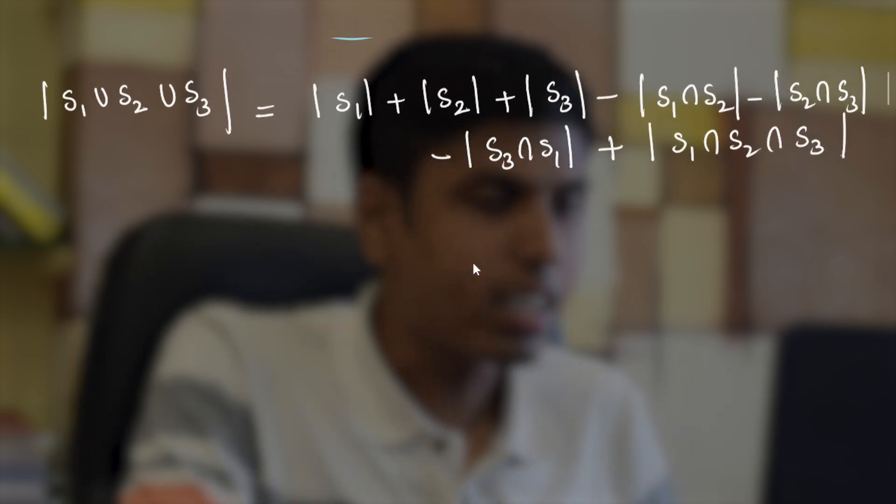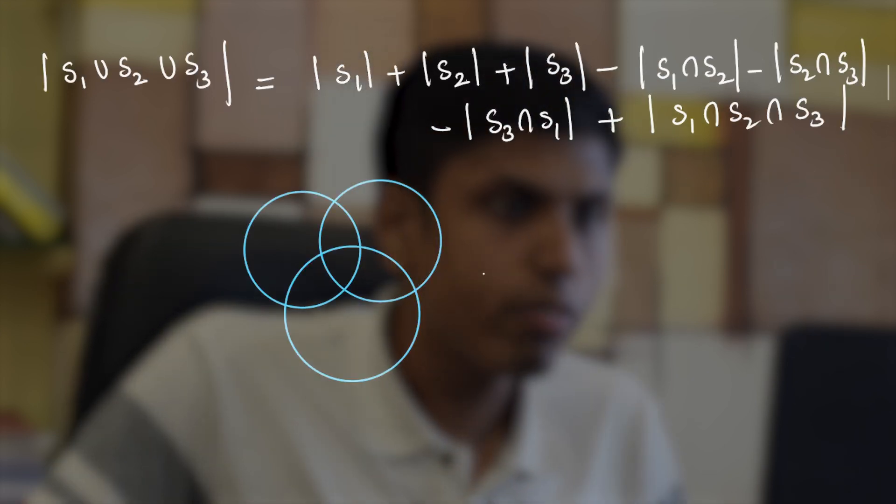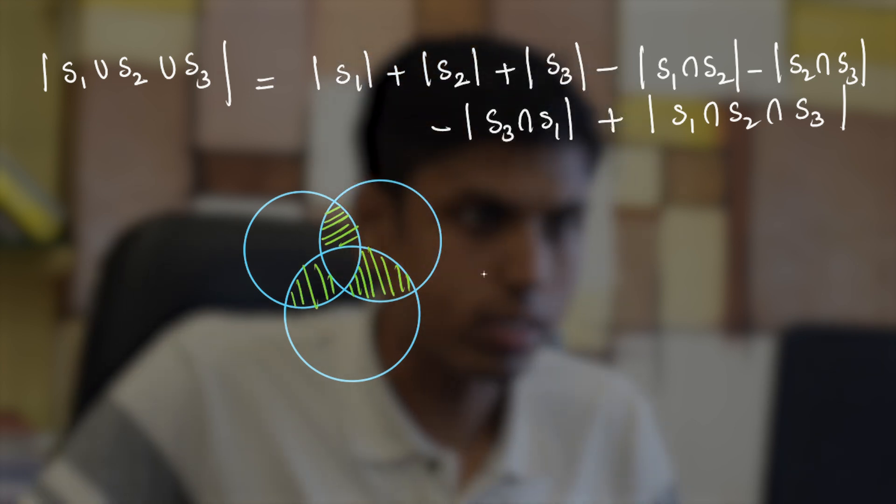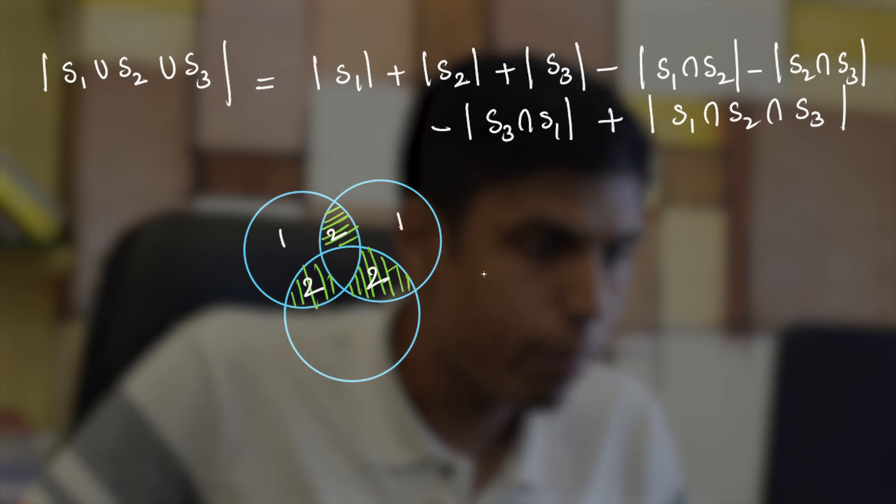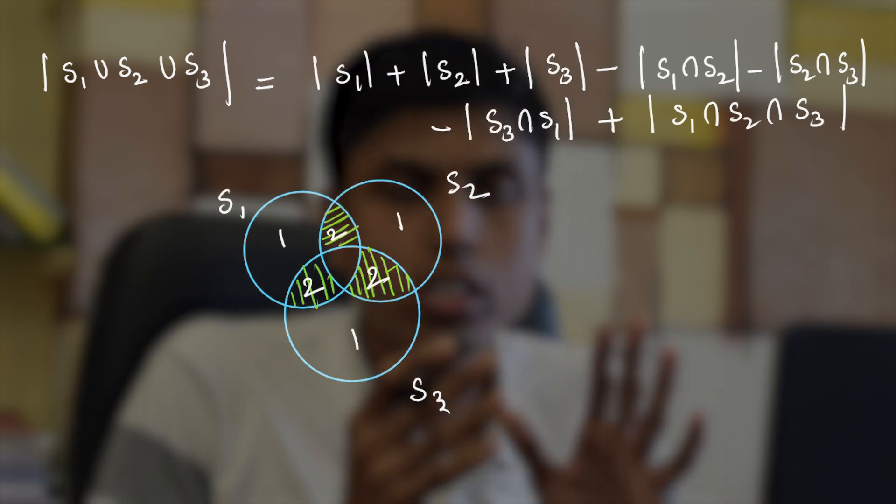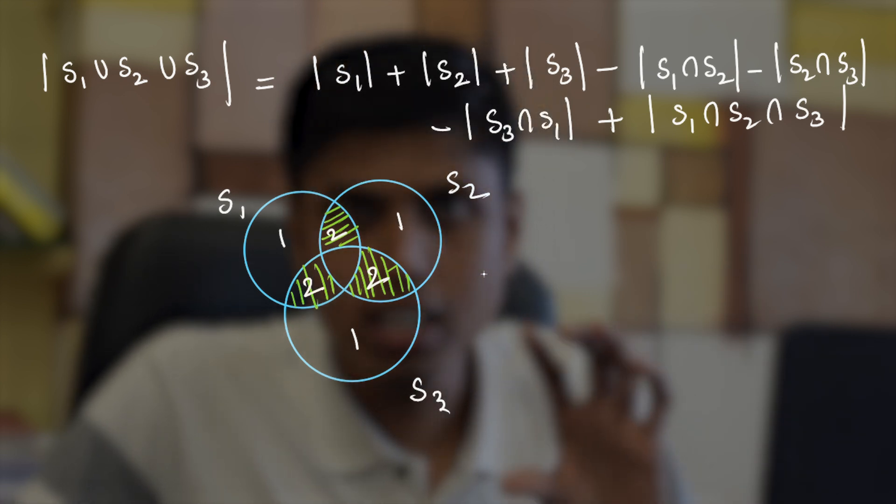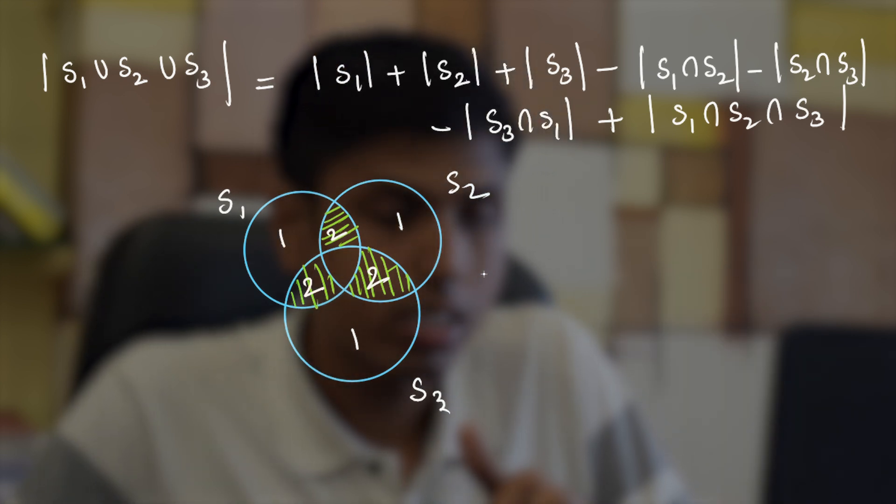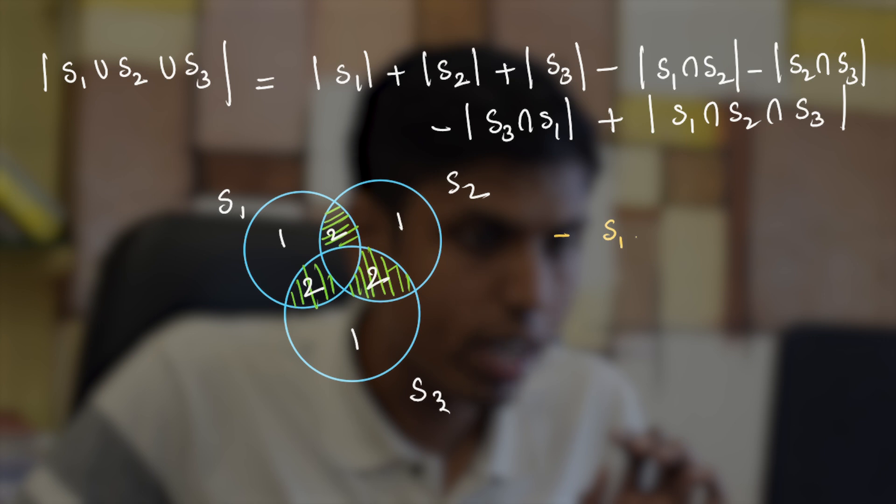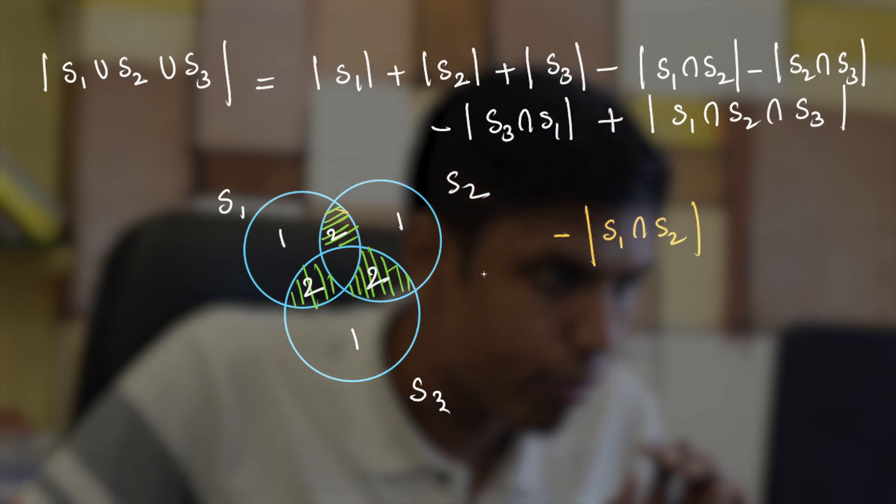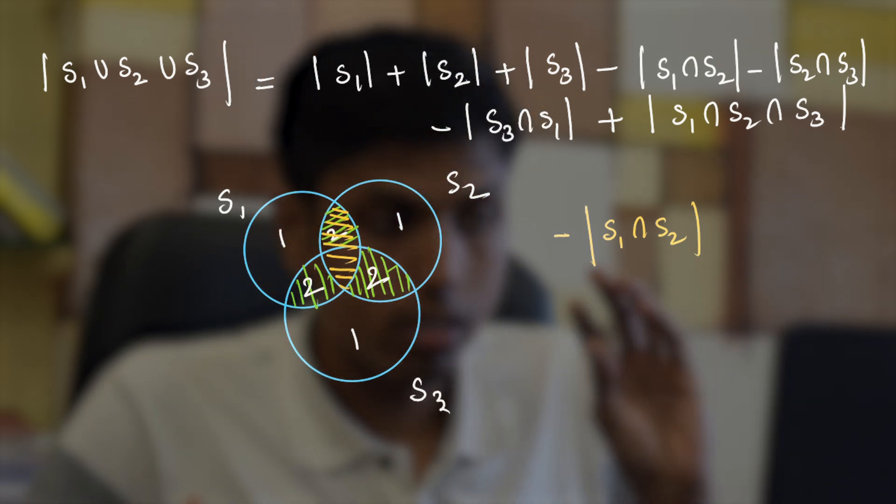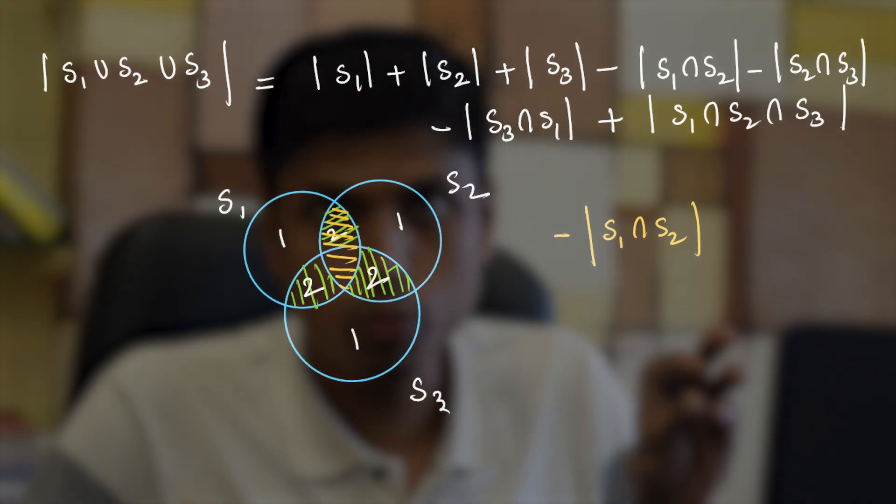Having that in mind, let's understand the quick reason behind this definition. Notice that when you add all these cardinalities, the green shaded parts are actually counted twice. They are counted twice whereas the outer parts which exactly belong to one set are counted once. So we need not disturb them but since the green shaded areas are overcounted we have to subtract it in order to account for this overcounting. And that's why we subtract cardinality of S1 intersection S2 which actually refers to this part.